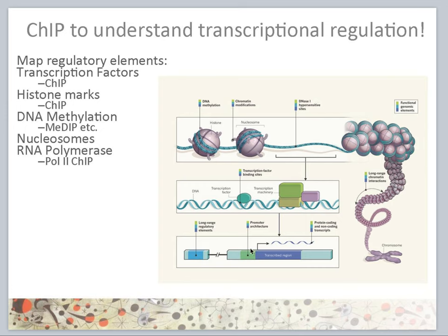If we look at the gene level, every gene will have a promoter region. This promoter region often contains transcription factor binding sites or repressor binding sites that will regulate the expression or non-expression of transcribed genes. These promoters are often co-activated by long-range regulatory elements such as enhancers. Both enhancers and transcription factor binding sites can be monitored using chromatin immunoprecipitation.